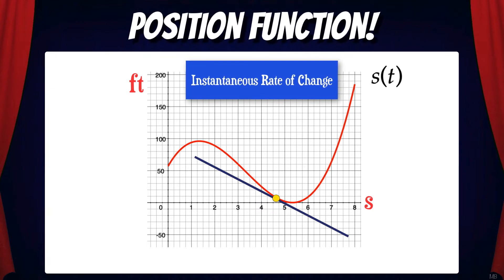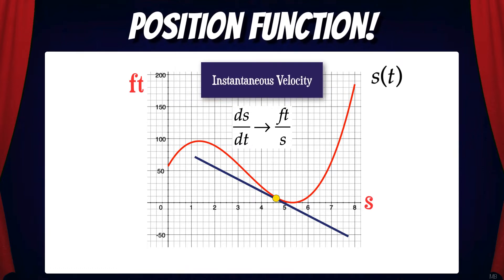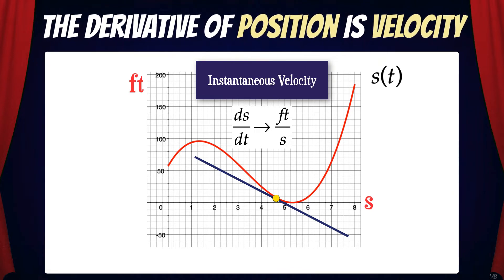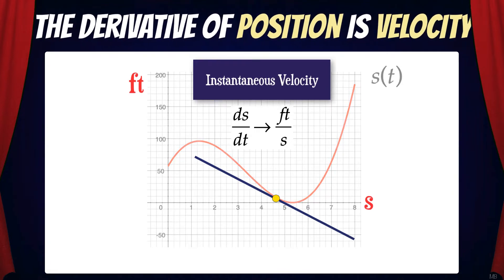Now, if we find the instantaneous rate of change at a point on the function — in other words, the slope of the tangent line — we would be finding the instantaneous change in position over the instantaneous change in time, which is the instantaneous velocity. And this is ds/dt, which in this case also has units of feet per second. In summary, the derivative of position is velocity.